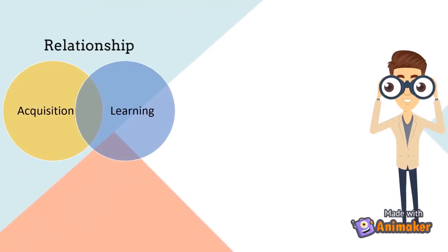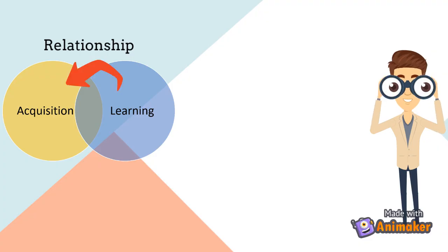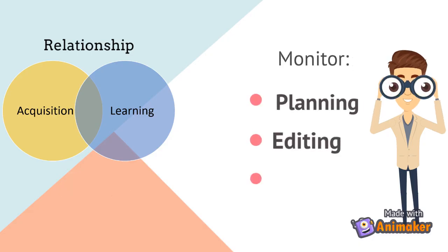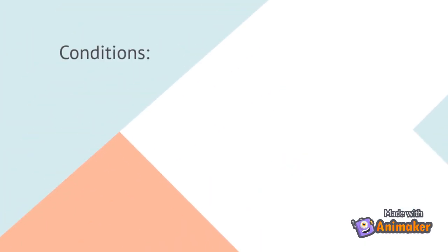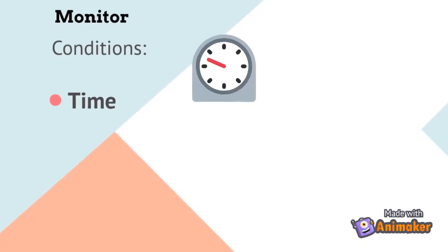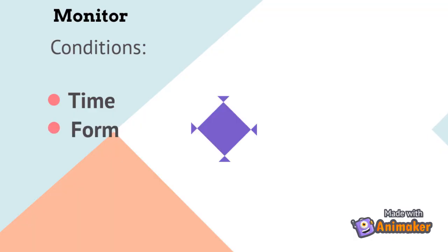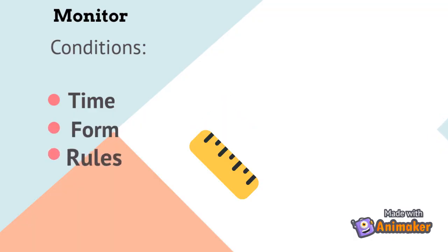It explains the relationship between acquisition and learning, and defines the influence of the latter on the former. According to Krashen, the acquisition system is the utterance initiator, while the learning system performs the role of the monitor or the editor. This monitor acts in a planning, editing, and correcting function, where three specific conditions are met. The three specific conditions are sufficient time, focus on form, and knowledge of the rules.